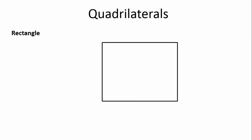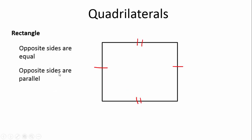Let's look at a rectangle. The opposite sides are equal — this side is equal to this side, and this side is equal to this side, but these two are not equal to each other. Opposite sides are parallel, again like the square. All angles are 90 degrees, just like our square, so we can draw a right angle in each corner, and those are all equal.